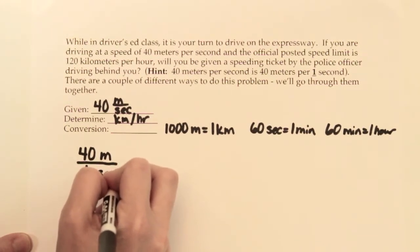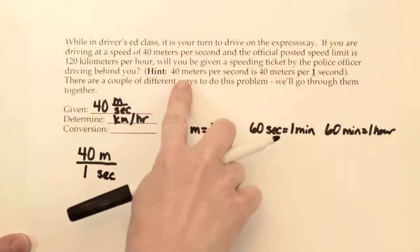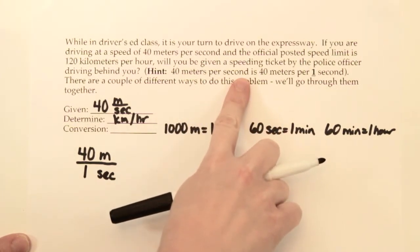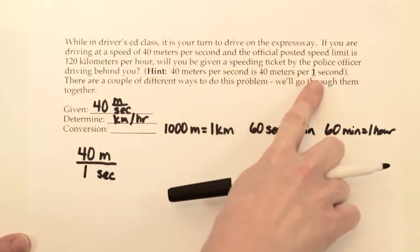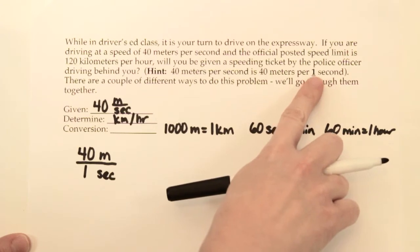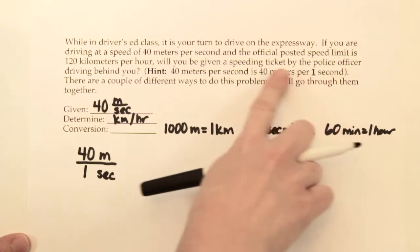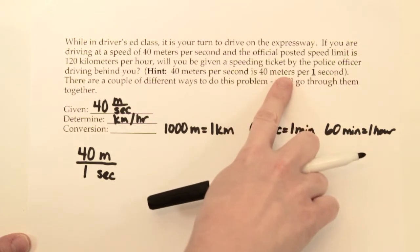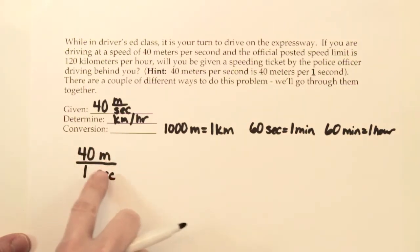Usually the one at the bottom is just a placeholder, but when we say 40 meters per second, we're really saying 40 meters per one second. We just leave out the one. For every one second's worth of time, you would have gone 40 meters worth of distance. So 40 meters per second, we still get our given over the number one.